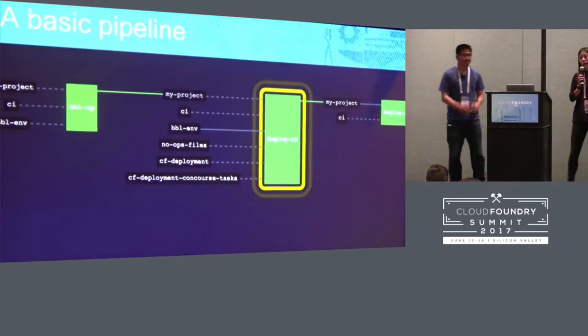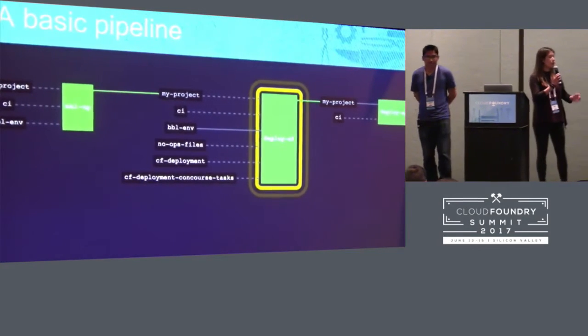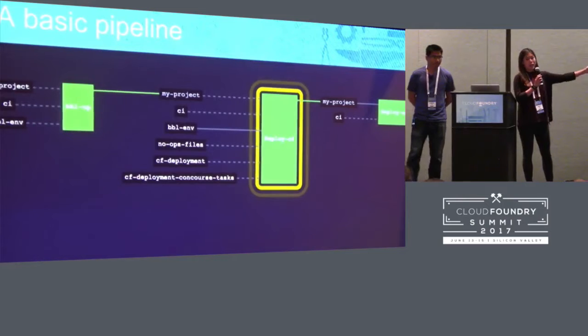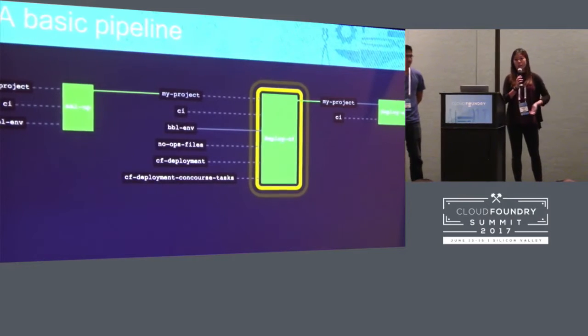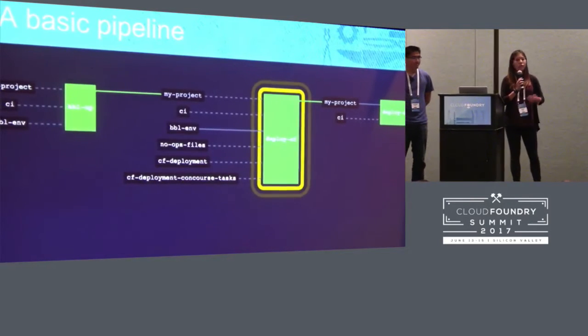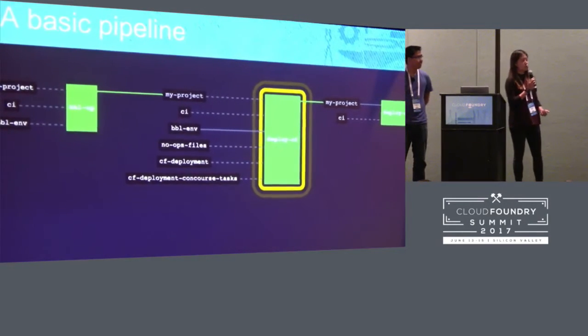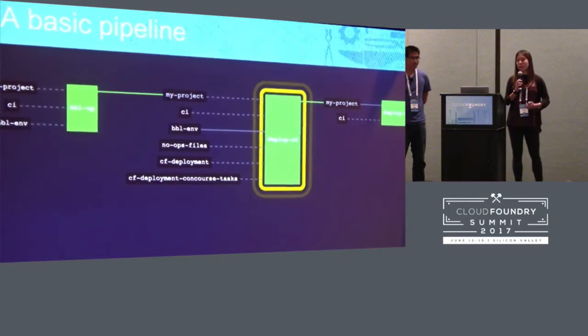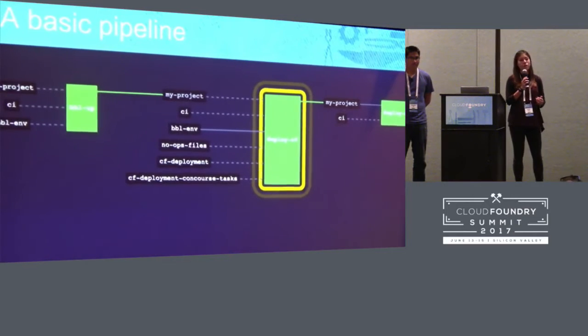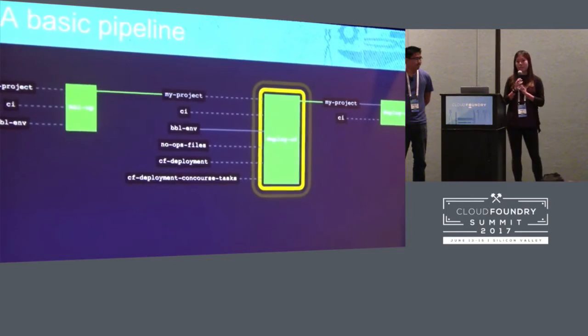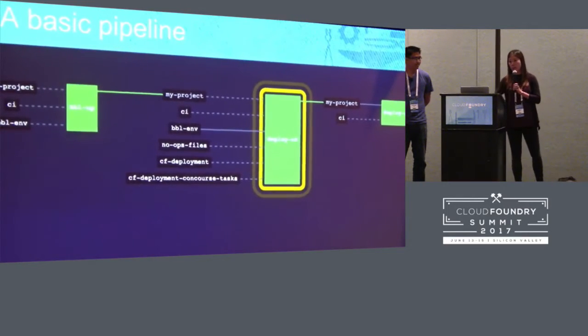If you're wondering what these commands look like, it's essentially just bubble up and bubble create LBs type CF, and you'll essentially have a Bosch director ready for you to deploy CF. After you've run the first task in this pipeline of bubbling up, you now have a Bosch director and the underlying CF infrastructure necessary to deploy CF using CF deployment.